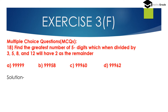Question number 18, multiple choice question MCQ: Find the greatest number of 5 digits which, when divided by 3, 5, 8, and 12, will have 2 as the remainder. Options are given. First, find out the LCM of the numbers 3, 5, 8, and 12.